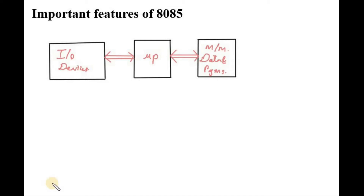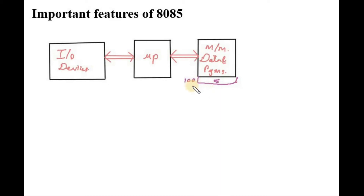Suppose memory has 100 as a location — that means address — and 5 as data. So, 100 as a location means address, and 5 is the data stored at that location.